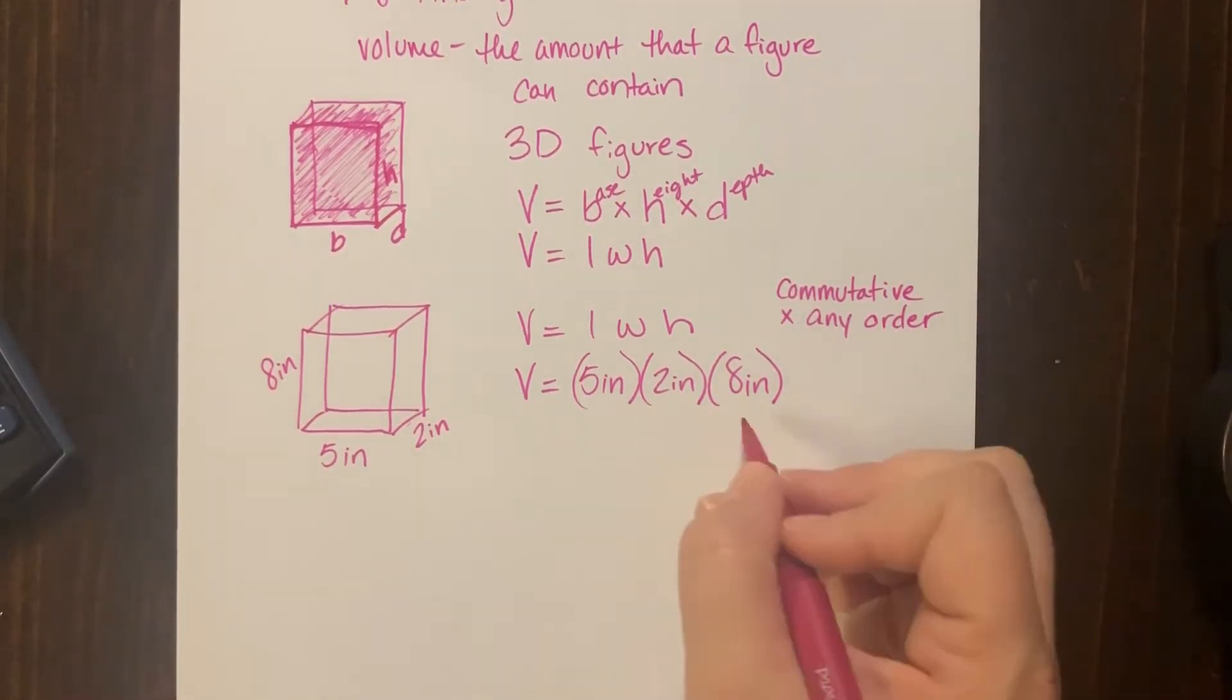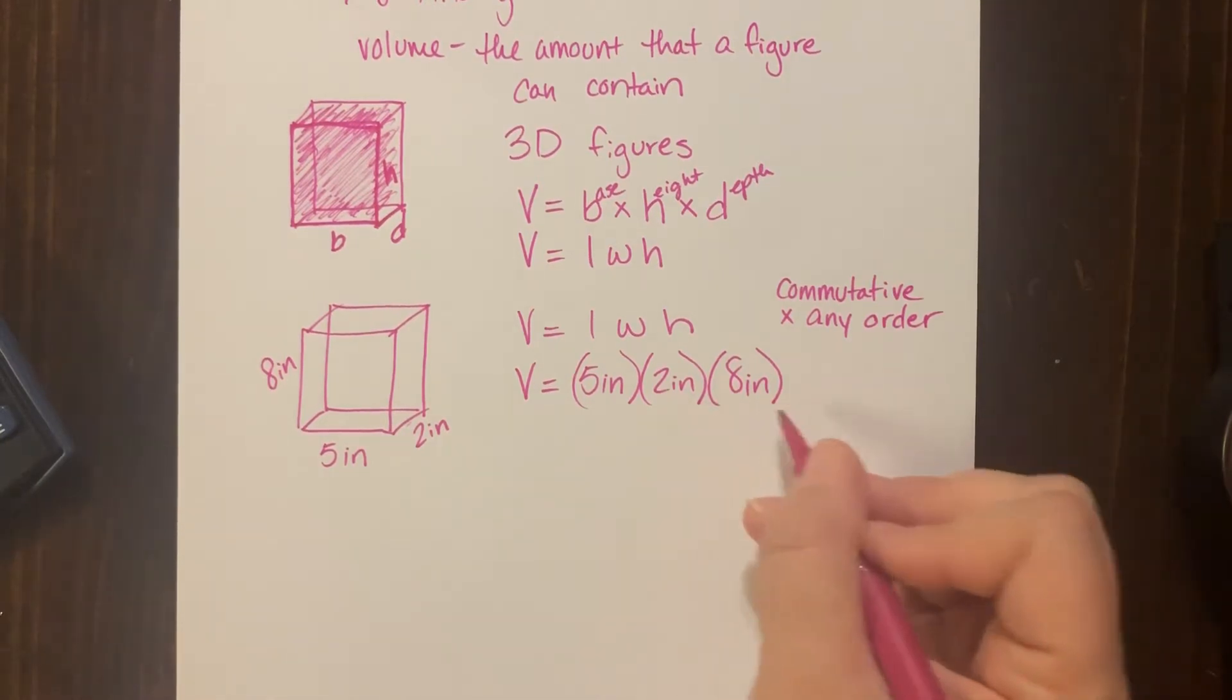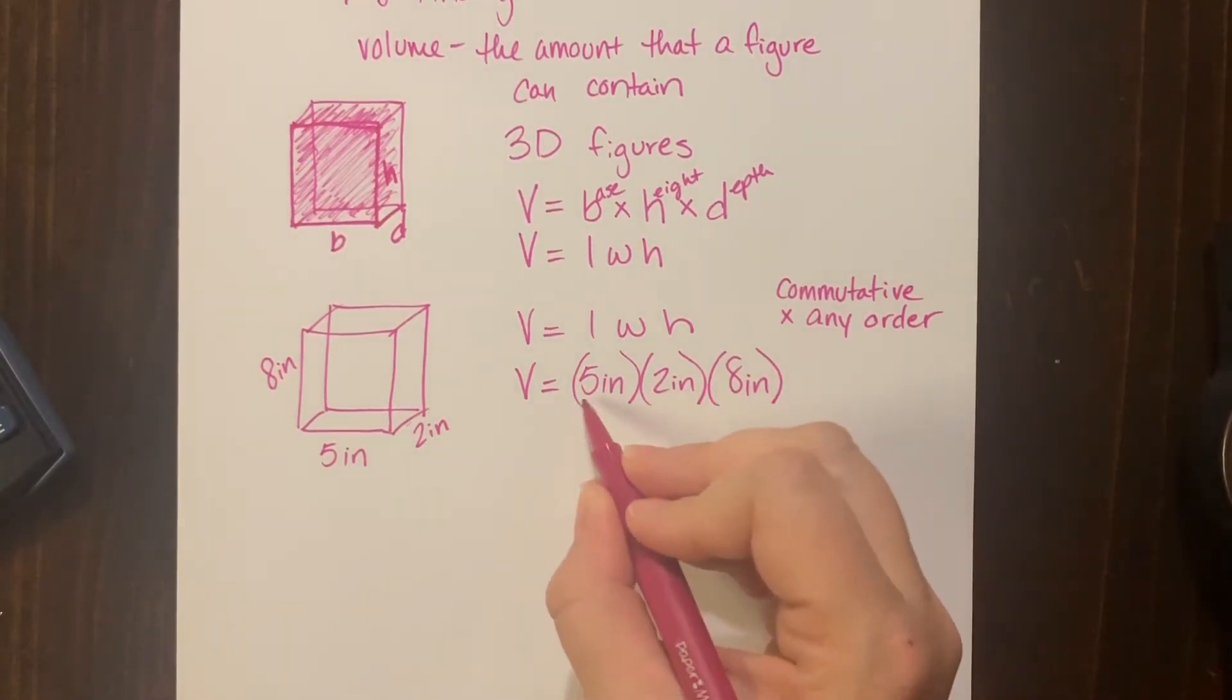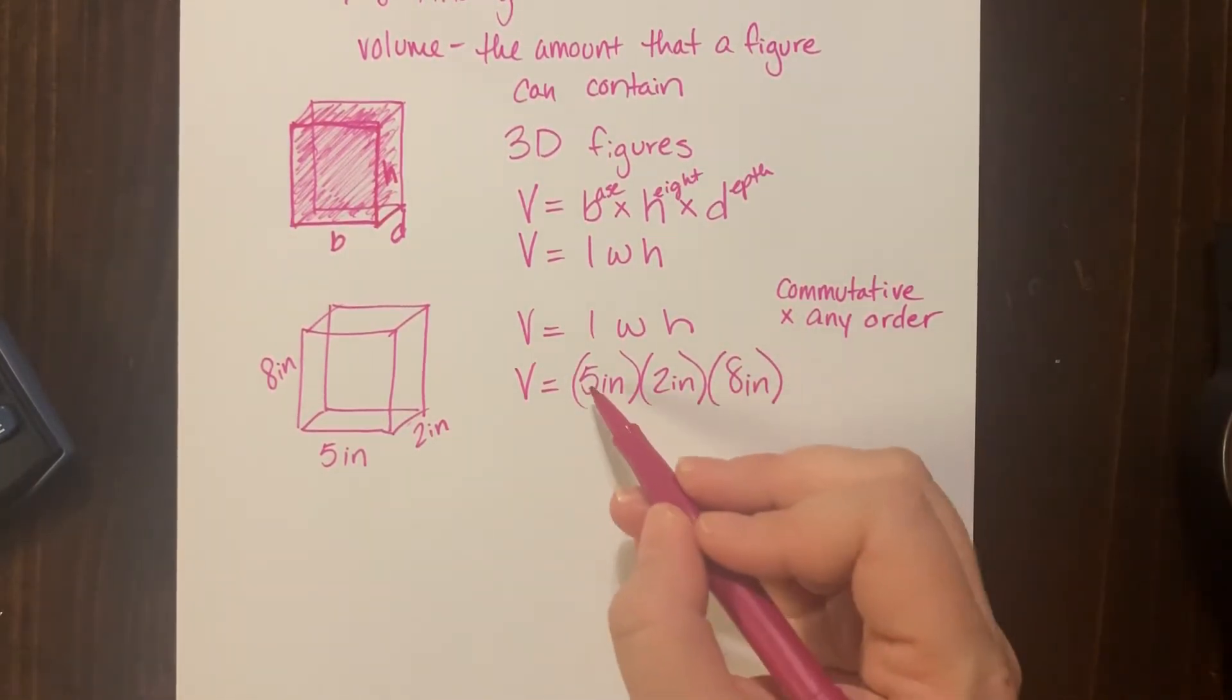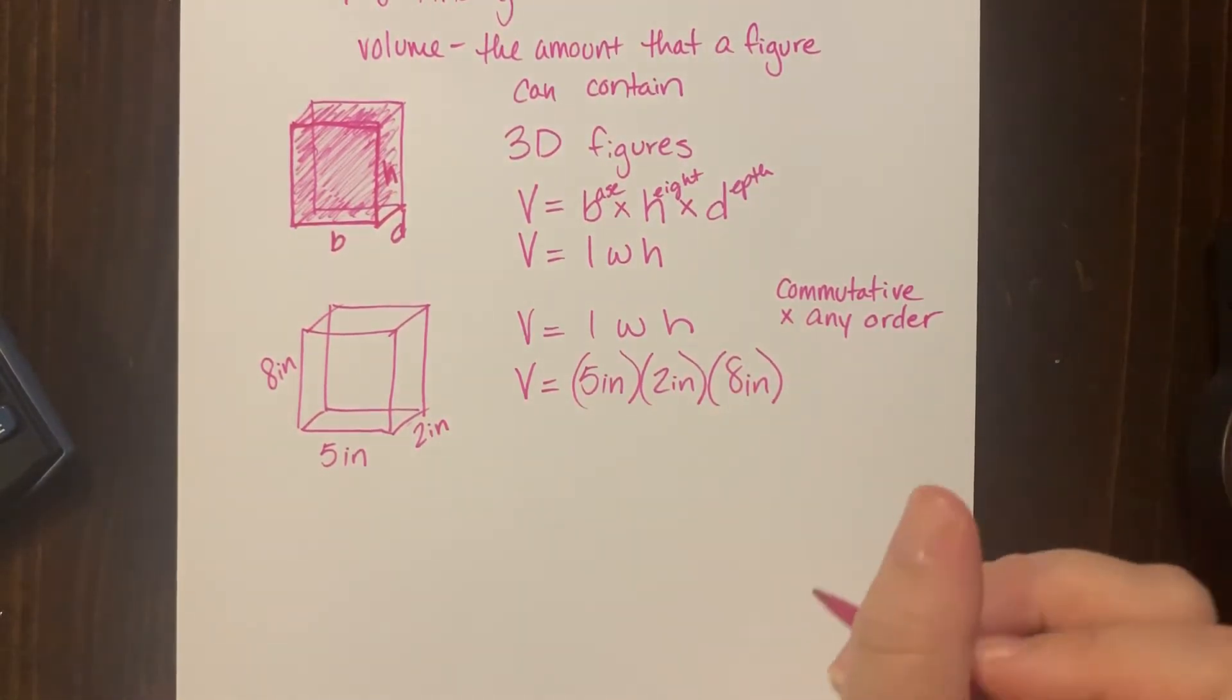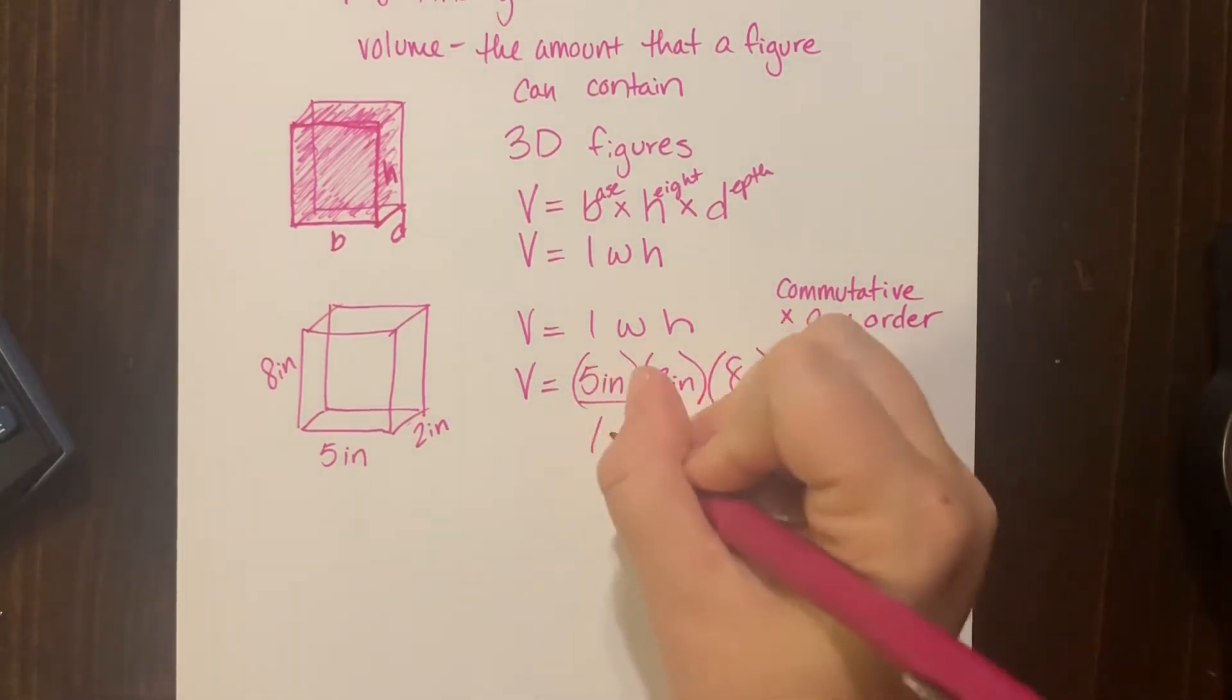So it doesn't matter which ones I multiply first. If you want to multiply eight times two first, go for it. If you want to multiply five times two first, go for it. If you want to multiply five times eight first, go for it—doesn't matter. We should all end up with the same answer. I'm going to go here because I can see already that's going to get me ten, which I love.